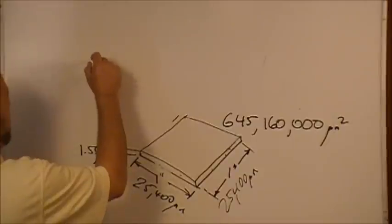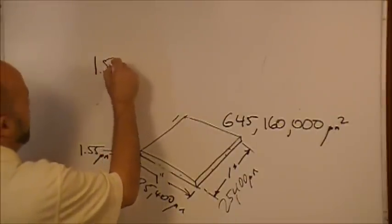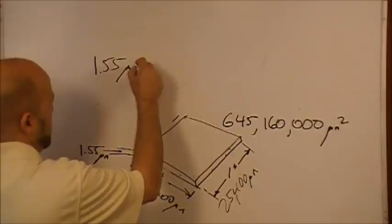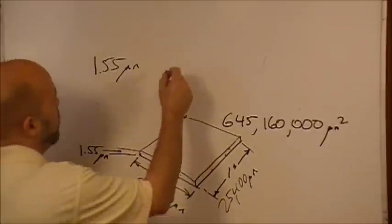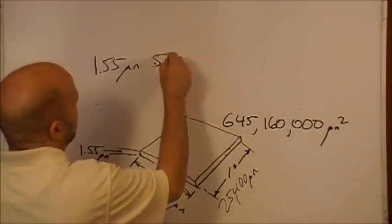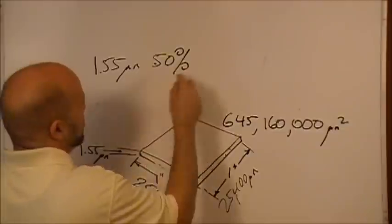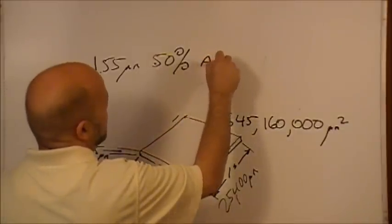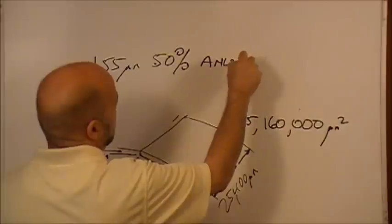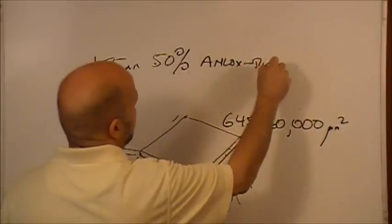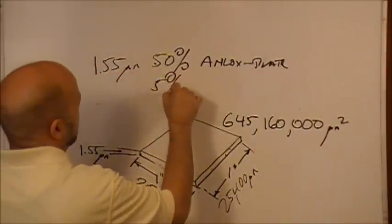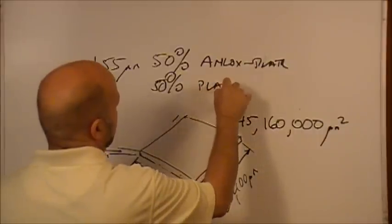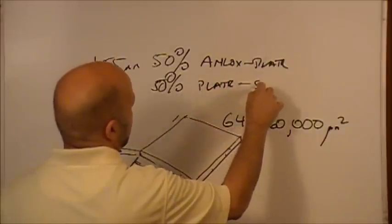So if we have 1.55 micron thickness of wet film, and only 50% of it transfers from anilox to plate, and then 50% from plate to substrate.